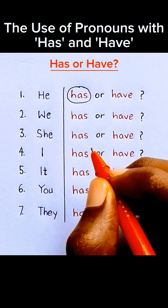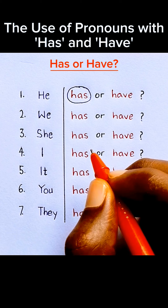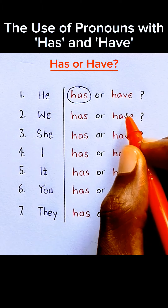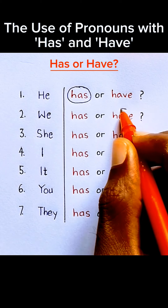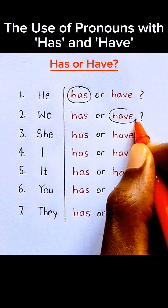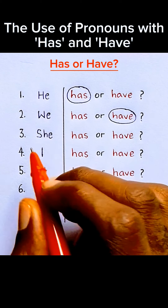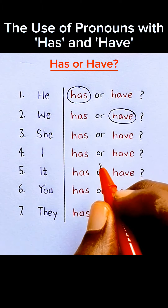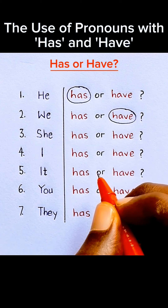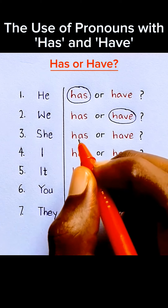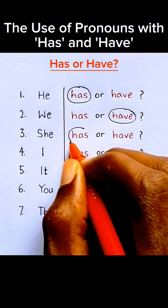Number two: 'we'. We is a plural subject and it goes with the plural verb 'have', so we say 'we have', not 'we has'. Number three: 'she'. She is a singular subject and it goes with the singular verb 'has', so we say 'she has', not 'she have'.